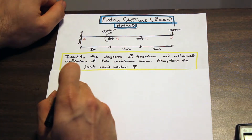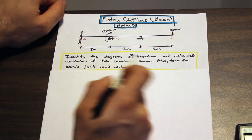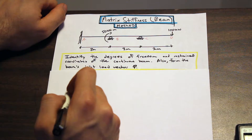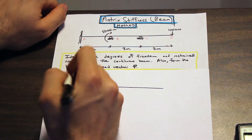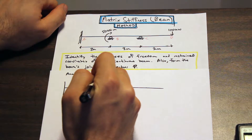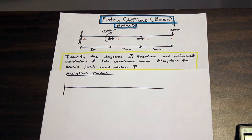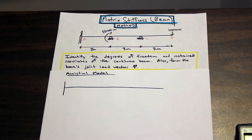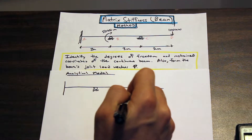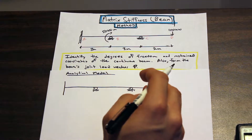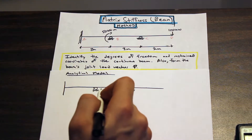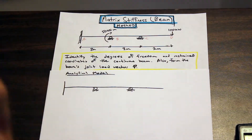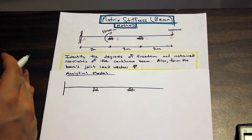Let's take a look at the first part of the question. So we have to identify the degrees of freedom and the restrained coordinates of the continuous beam. I'm going to show you by drawing something called the analytical model. The analytical model is a really important part of the matrix stiffness method — it's the first step when you tackle a problem. What you're going to do is draw the beam out again without the loads on it, and label in a coded manner from one to whatever, the parts that can move and the parts that are restricted.